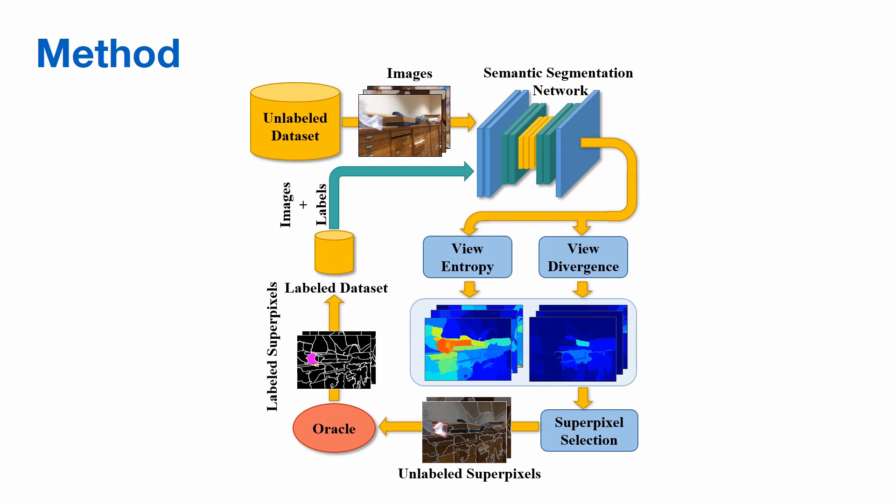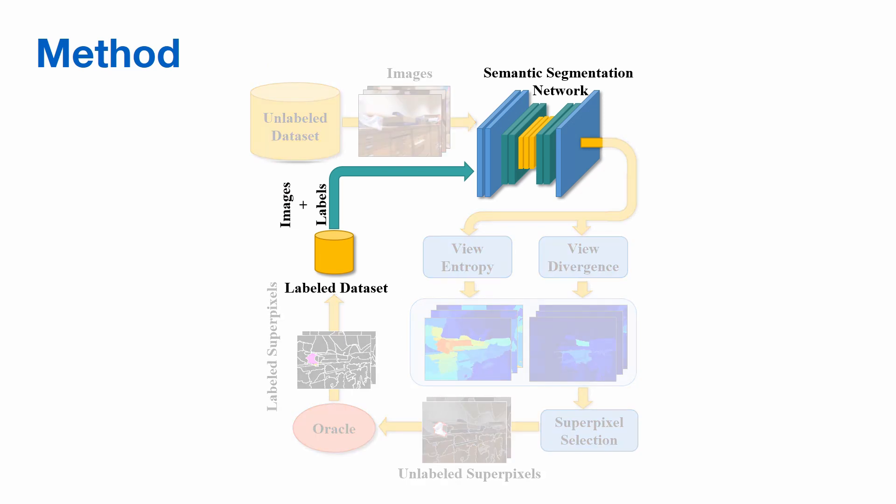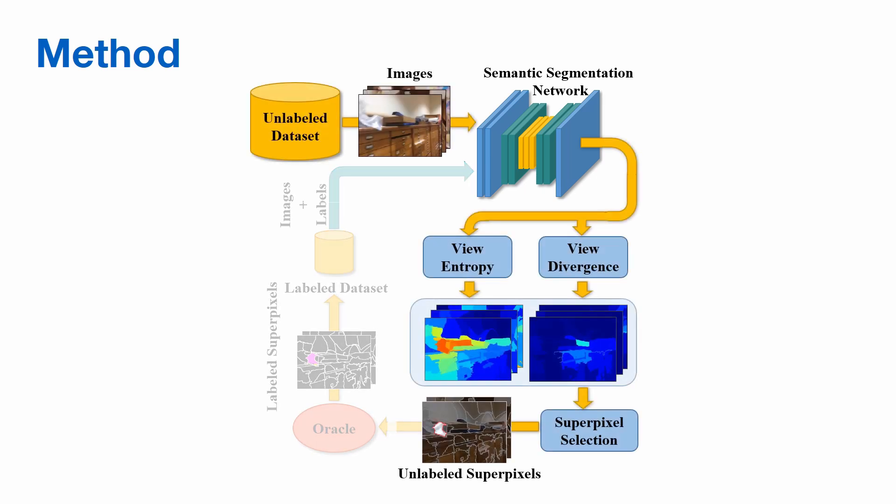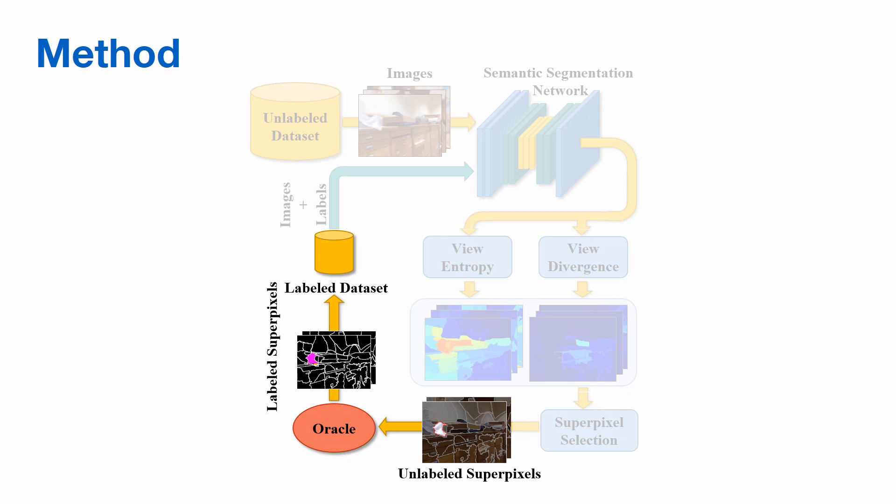The major steps of our method involve firstly training a segmentation model on an existing labeled dataset. Next, based on the current model state, we decide which unlabeled samples will be labeled next, based on model uncertainty. Finally, we acquire labels for the selected samples and add them to the labeled dataset.